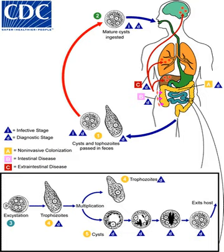It is important to distinguish the E. histolytica cyst from the cysts of non-pathogenic intestinal protozoa such as Entamoeba coli by its appearance. E. histolytica cysts have a maximum of 4 nuclei, while the commensal Entamoeba coli cyst has up to 8 nuclei. Additionally, in E. histolytica, the endosome is centrally located in the nucleus, while it is usually off-center in Entamoeba coli. Finally, chromatoidal bodies in E. histolytica cysts are rounded, while they are jagged in Entamoeba coli. However, other species — Entamoeba dispar and E. moshkovskii — are also commensals and cannot be distinguished from E. histolytica under the microscope.